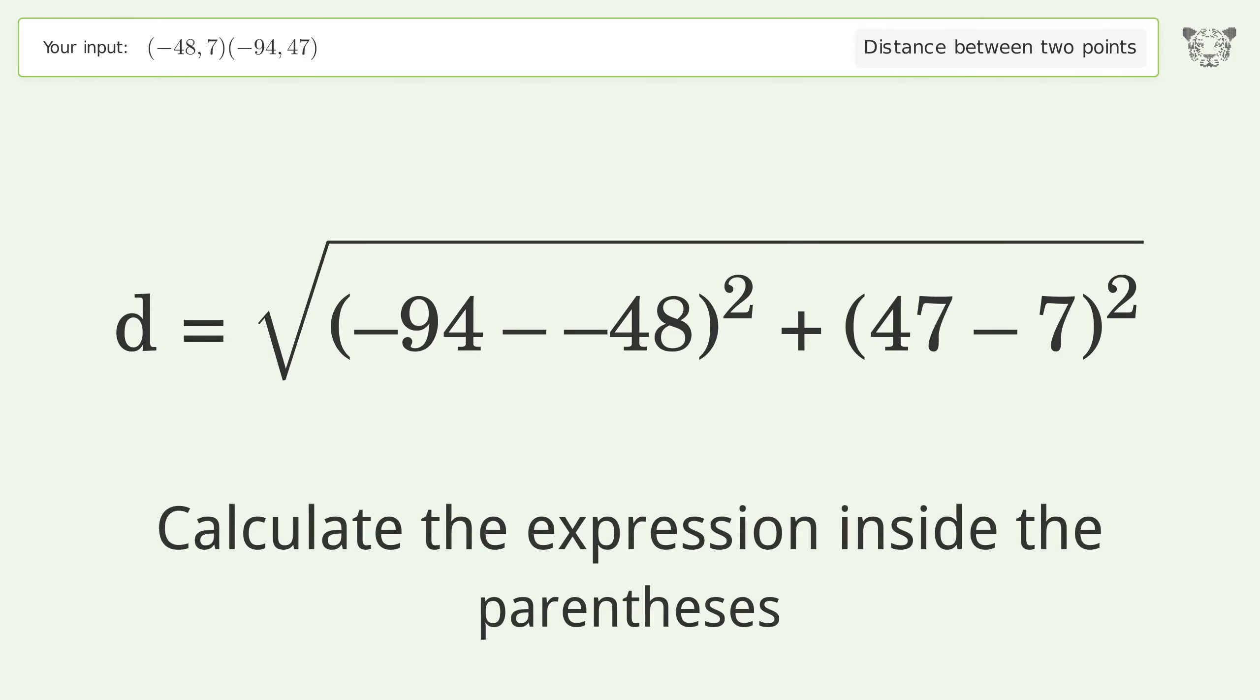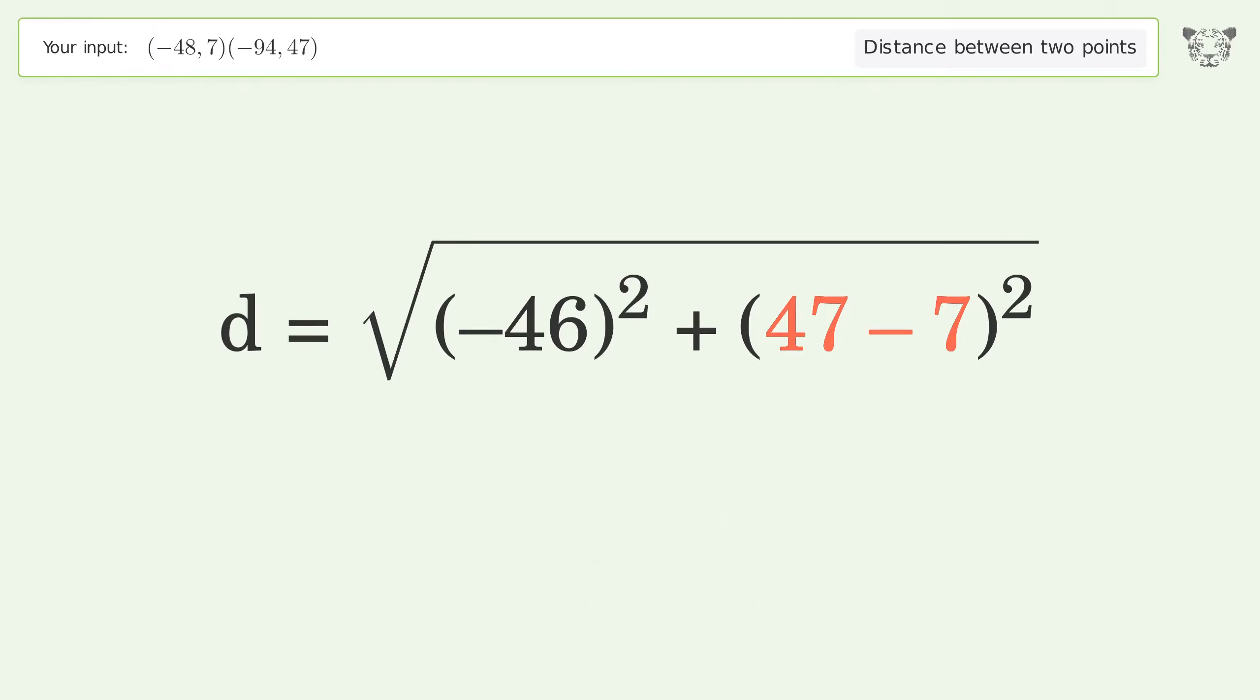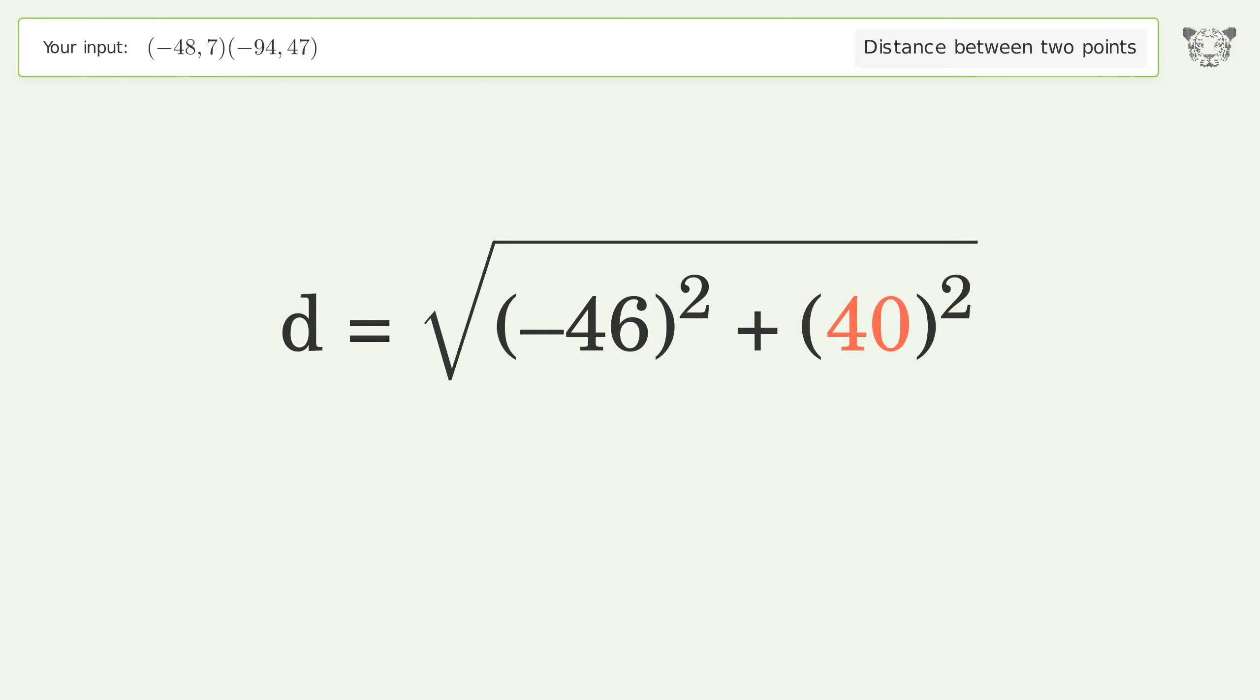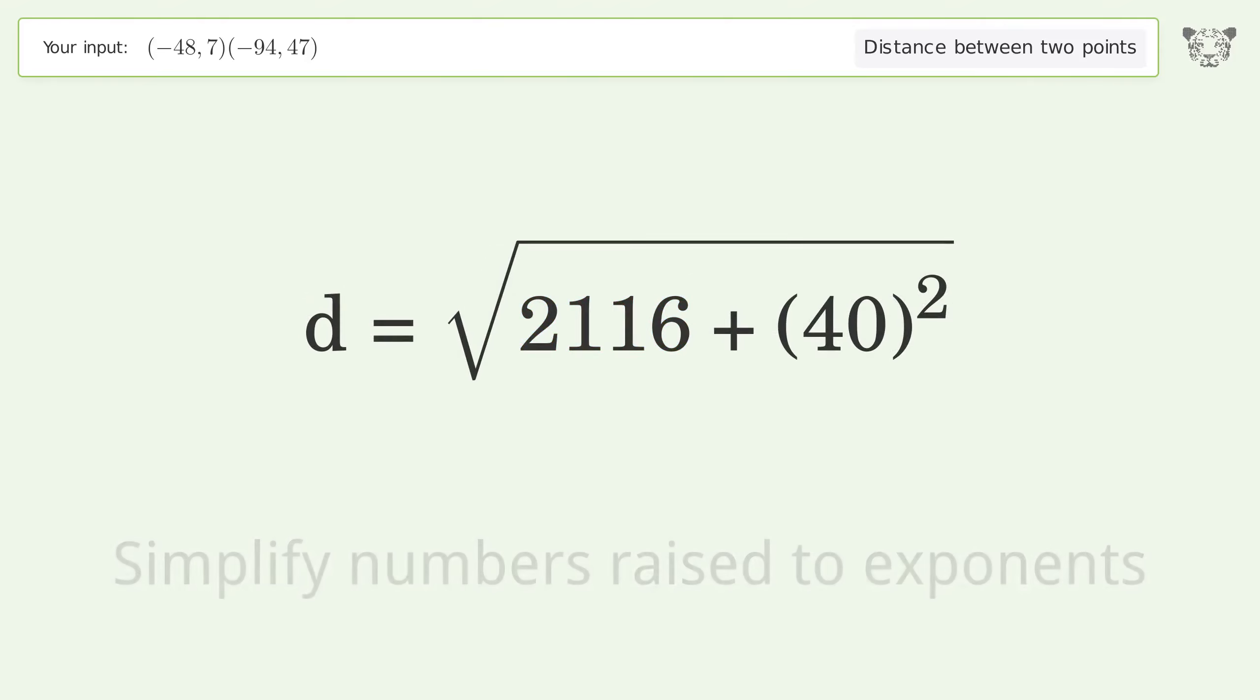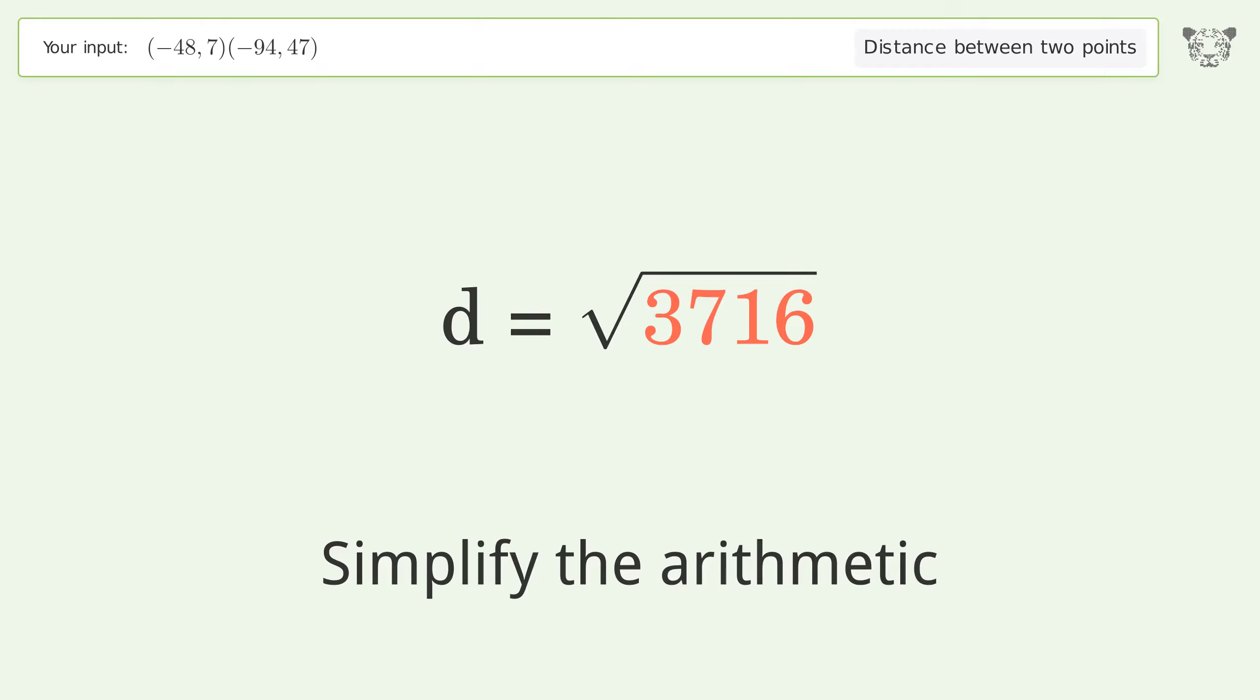Calculate the expression inside the parentheses. Simplify numbers raised to exponents. Simplify the arithmetic. And so the distance between the two points is the square root of 3716 or 60.959.